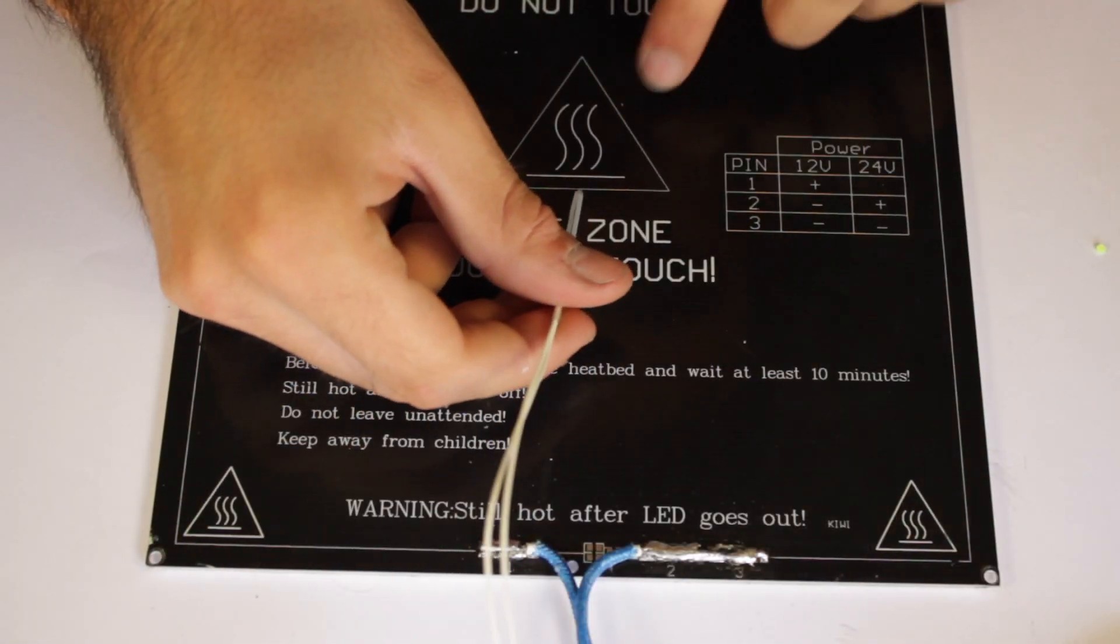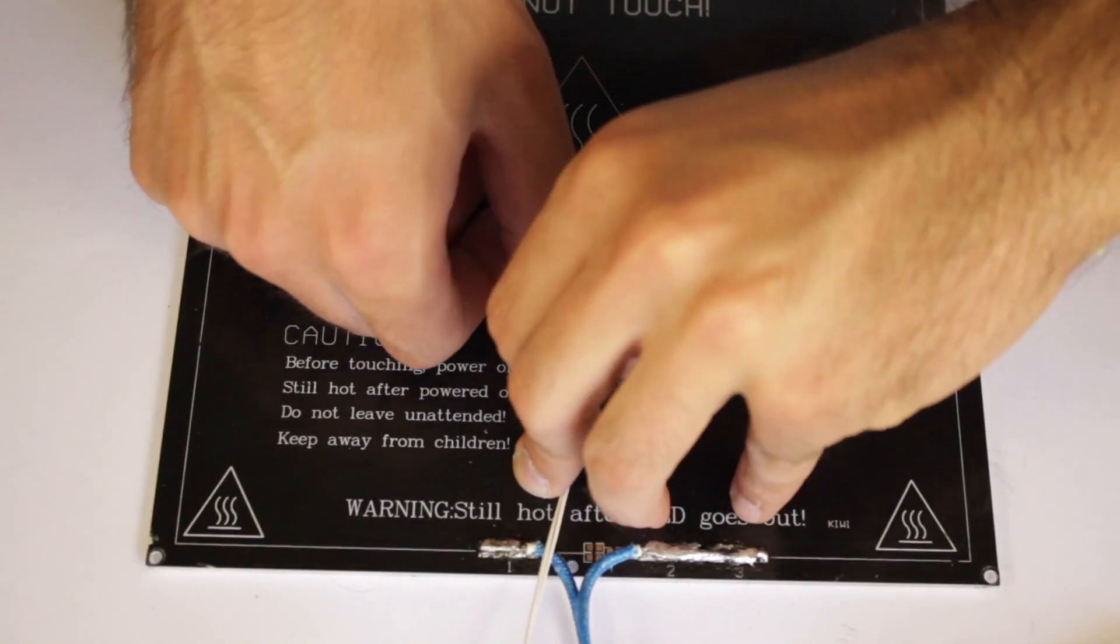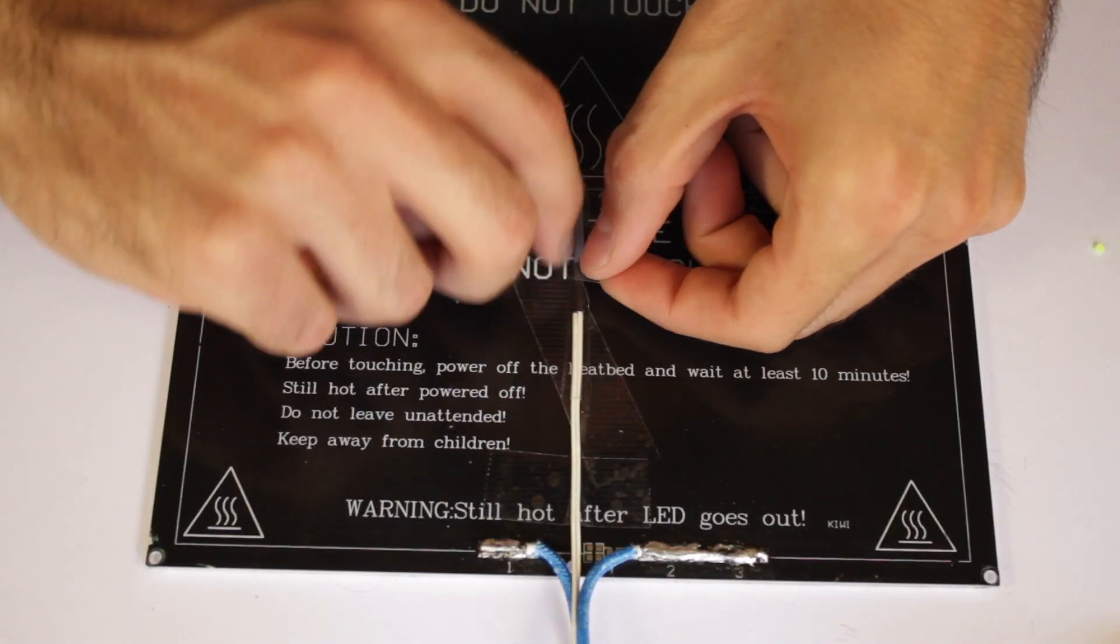The next step will be to install the temperature sensor in the little hole in the center of the aluminum plate. We'll introduce it and then stick it in place using some Kapton tape.